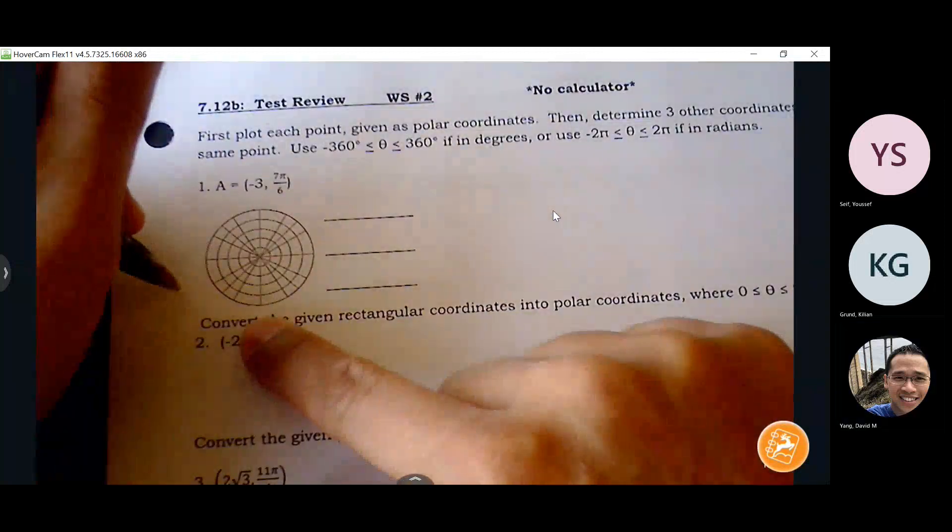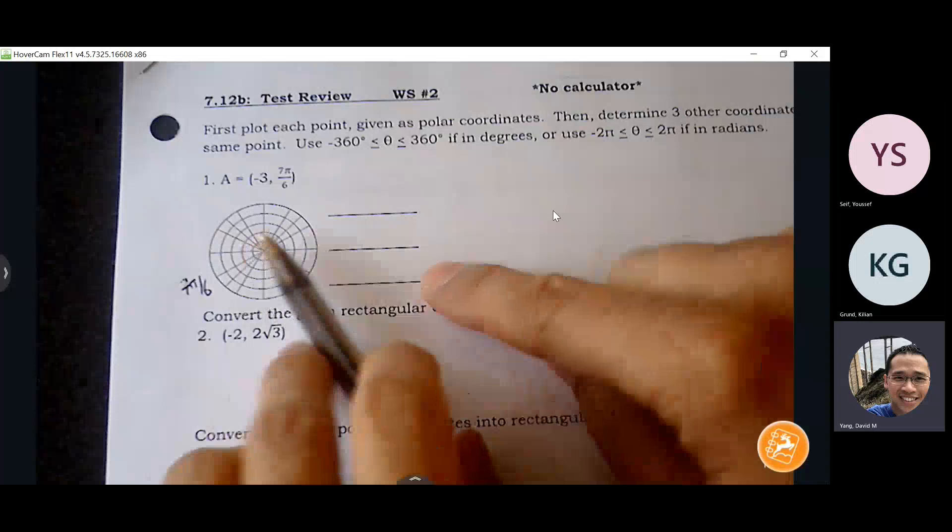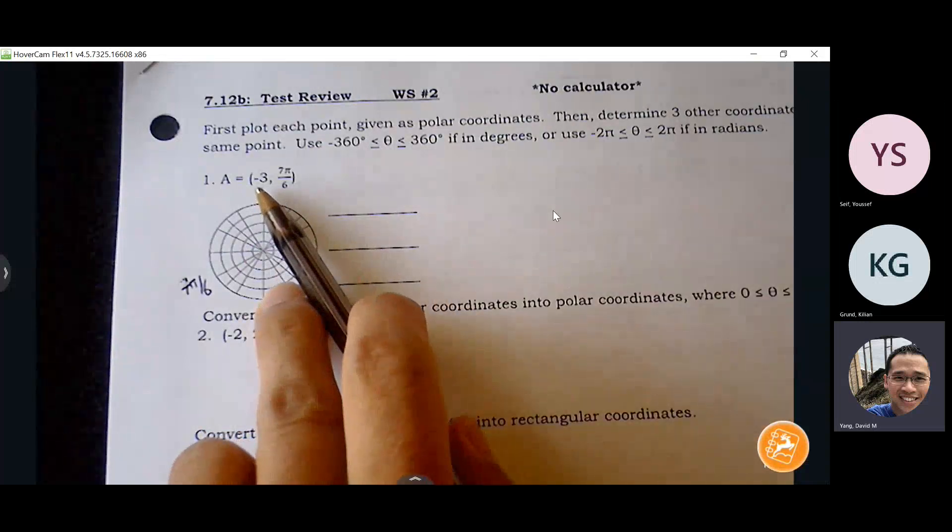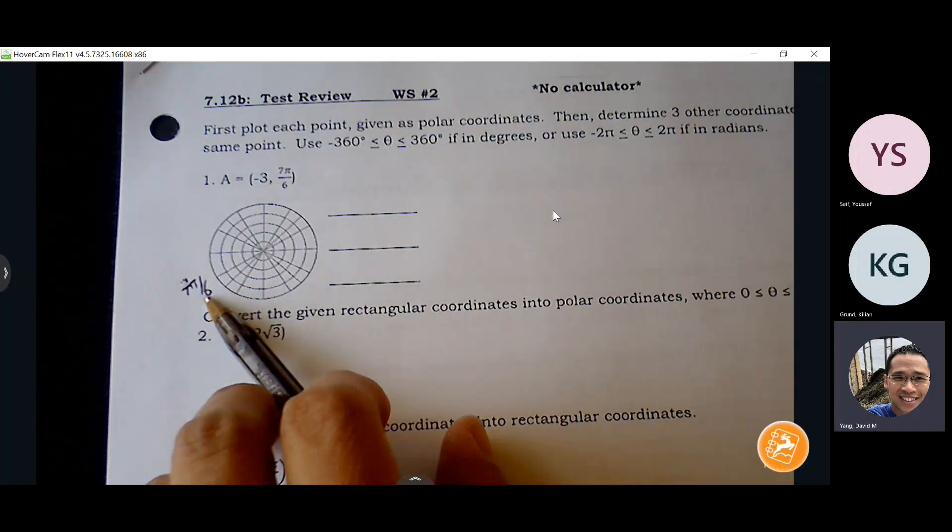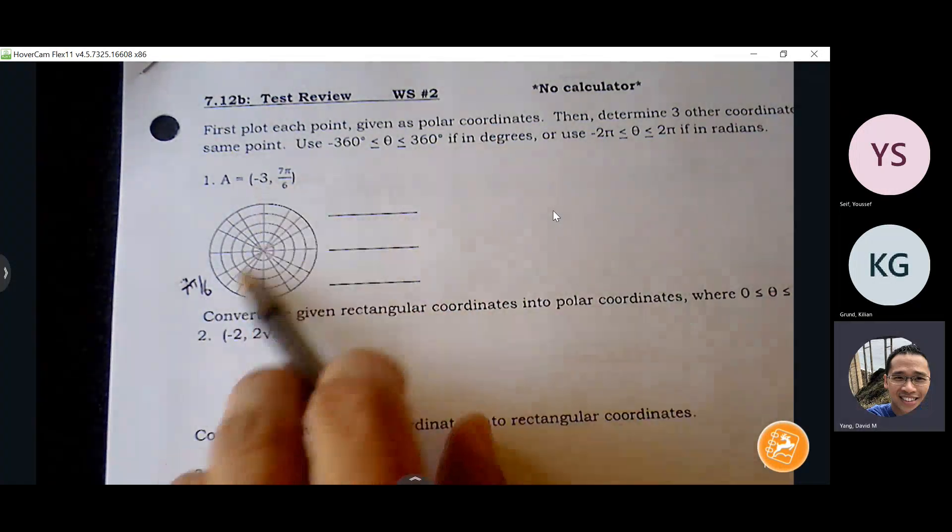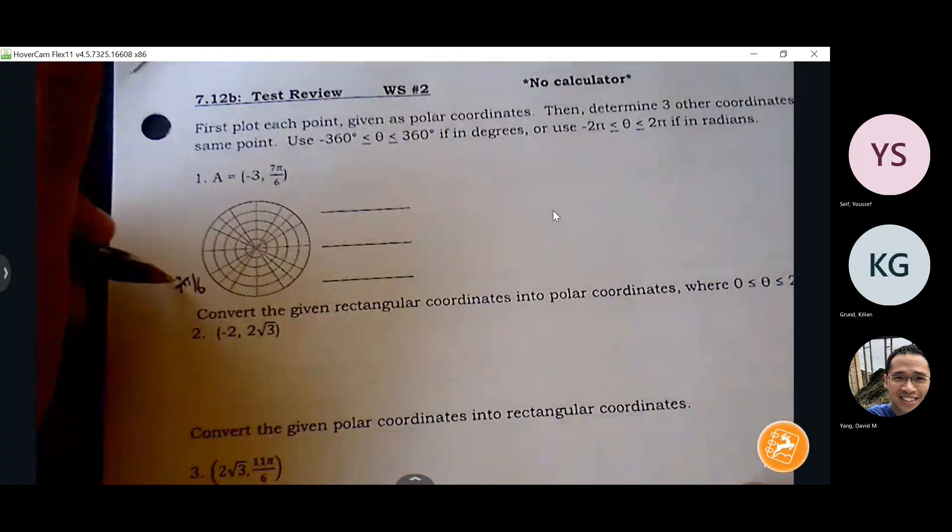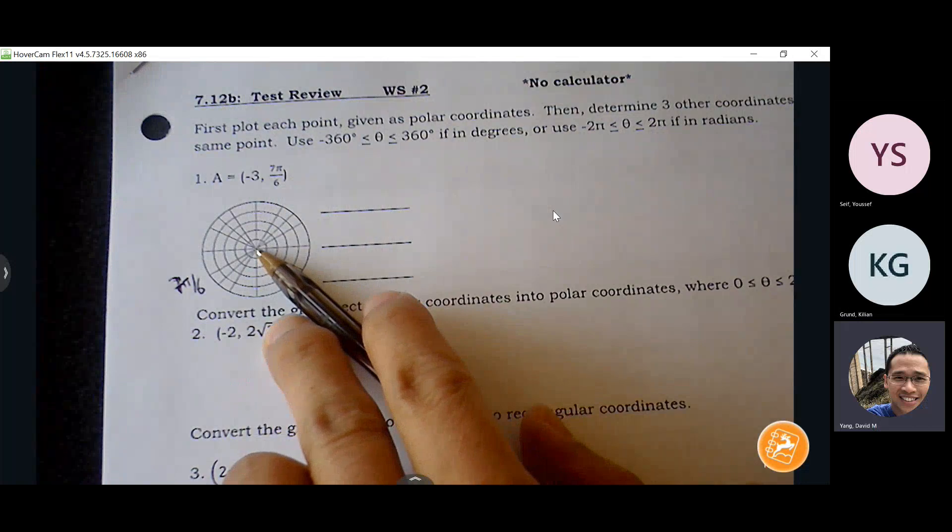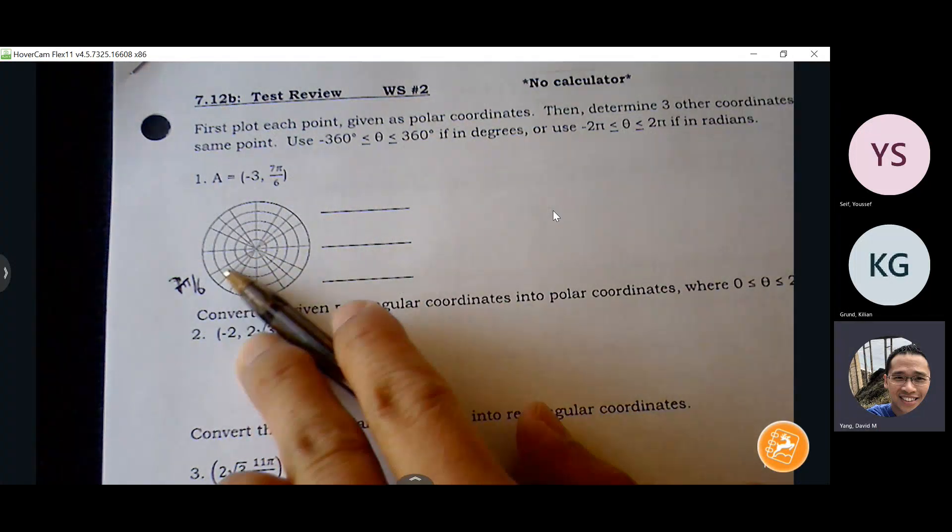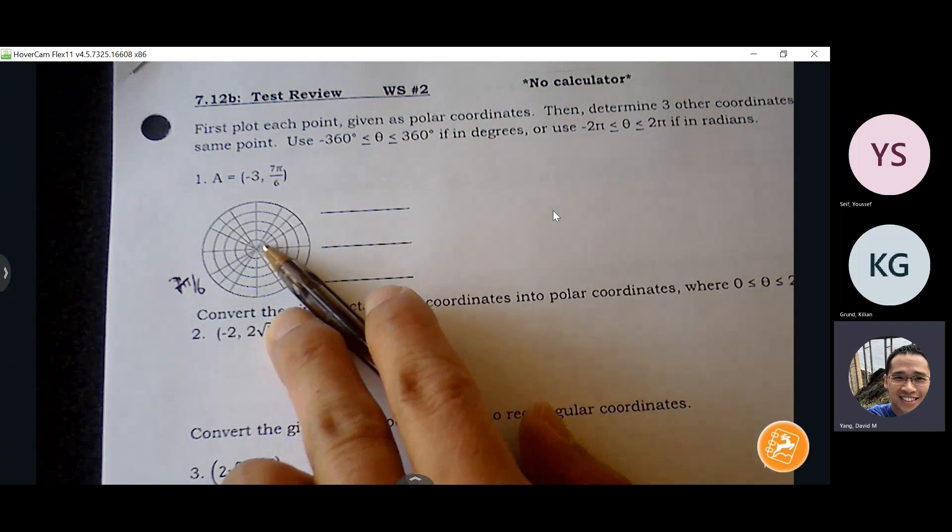Alright, so normally we will say seven pi over six is here. But this radius is going to tell you whether to walk towards or away. So this negative three means I'm going to walk away from this seven pi over six.